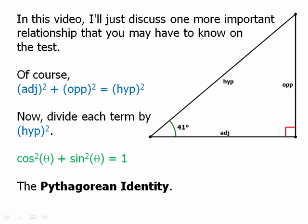Notice, incidentally, when we square a trig function, we write the square after the name of the function and before the angle. So we write it as cosine squared theta or sine squared theta.